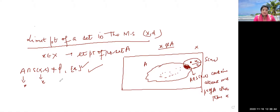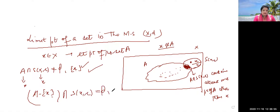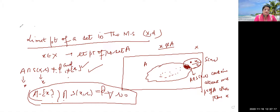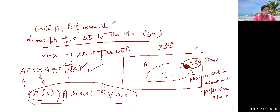Now we can write this another way. We need A minus the singleton set {x}, intersected with the ball, to be not equal to empty, for every radius r. So: (A \ {x}) ∩ B(x, r) ≠ ∅ for all r > 0. That point is called the limit point of the set, also called the cluster point or point of accumulation.